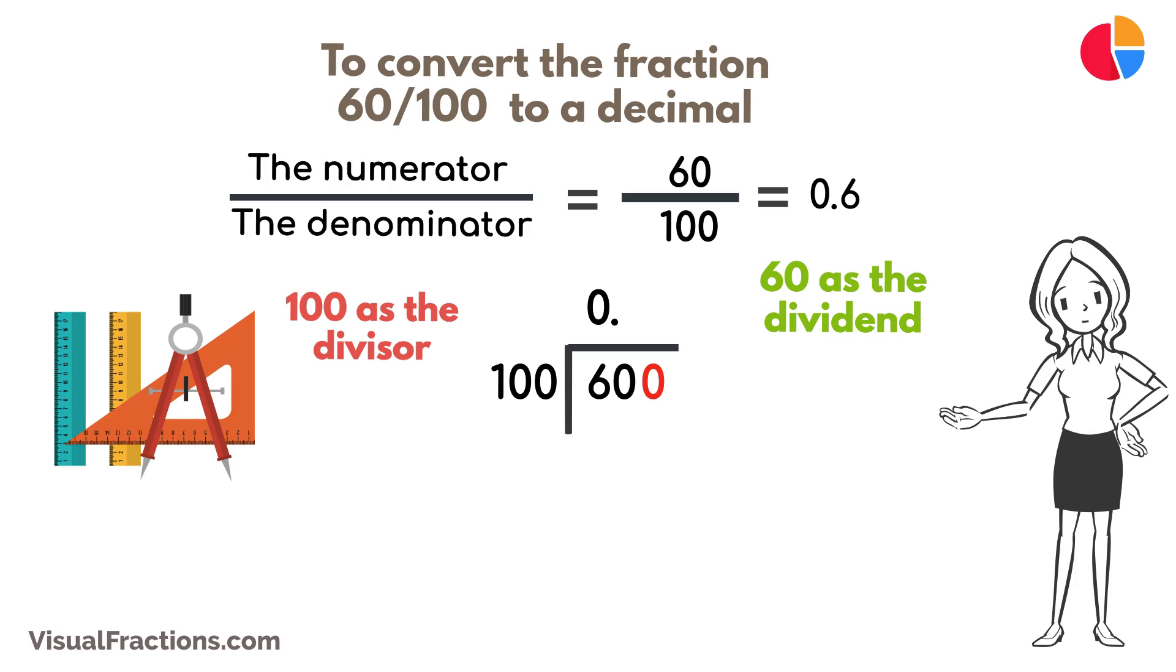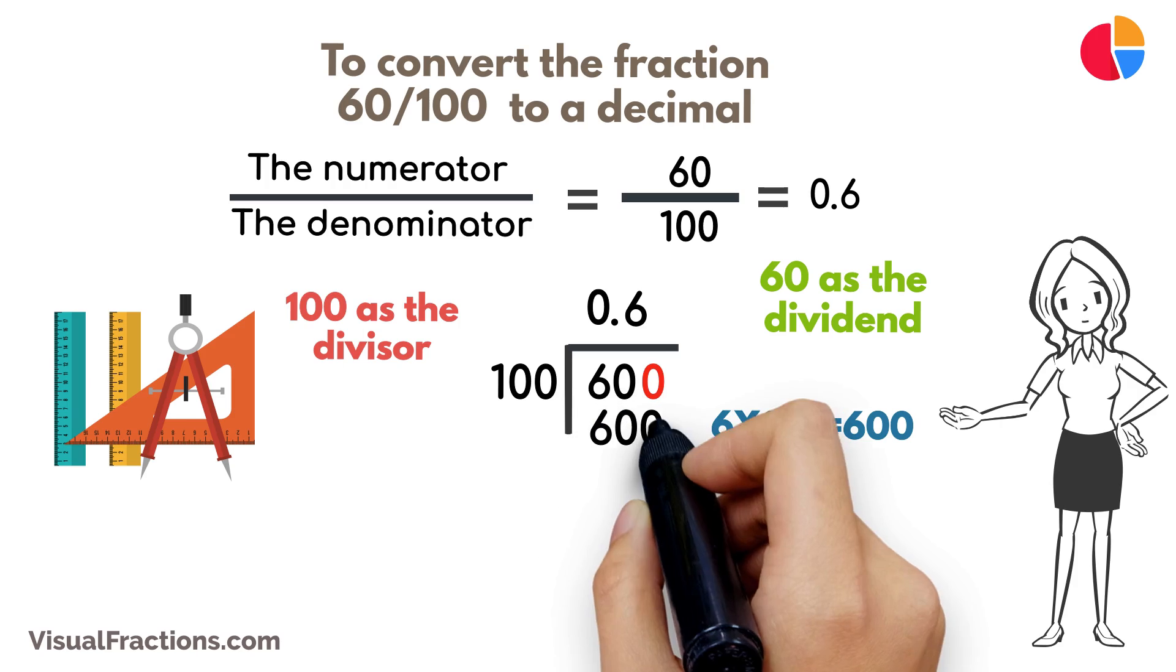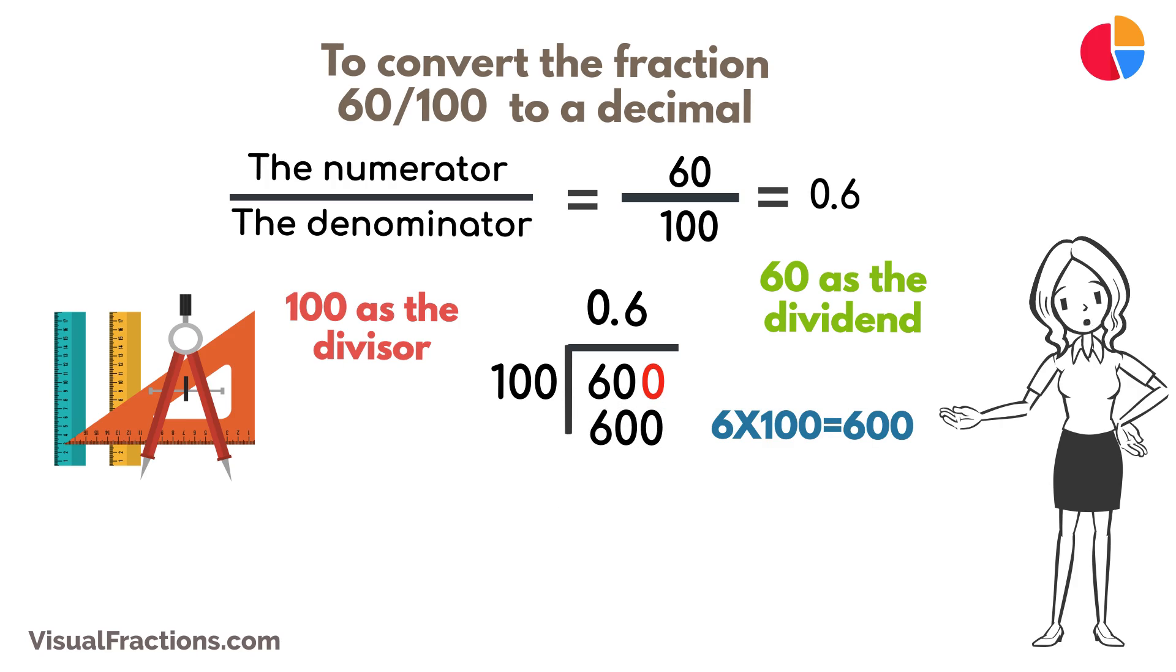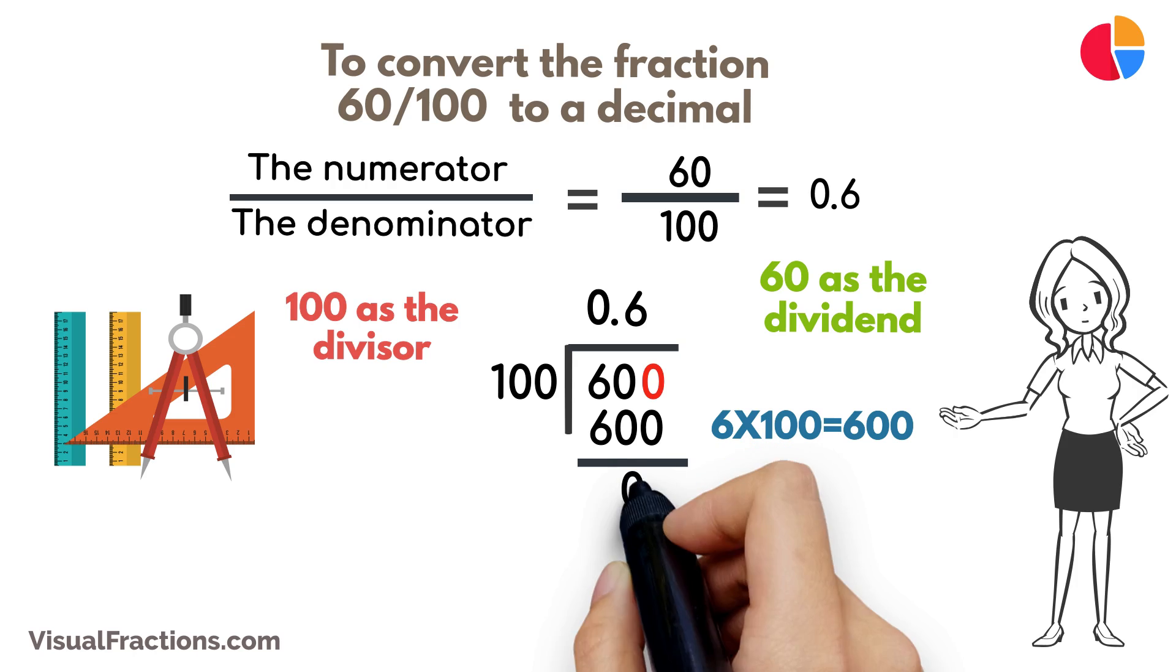How many times does 100 go into 600? Exactly 6 times. We write 6 after the decimal point in the quotient, making it 0.6. Multiplying 6 by 100 gives us 600. When we subtract 600 from 600, we get a remainder of 0.